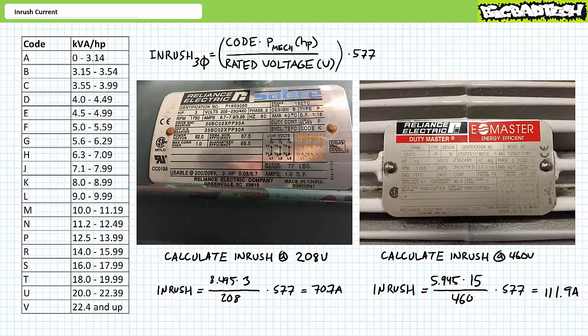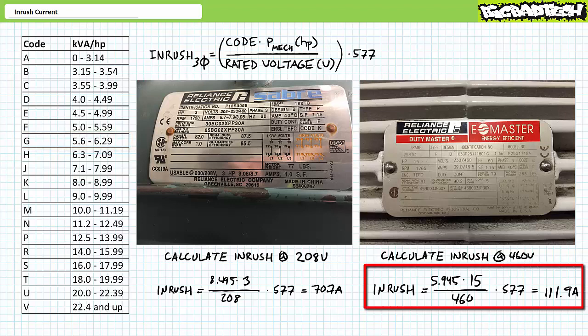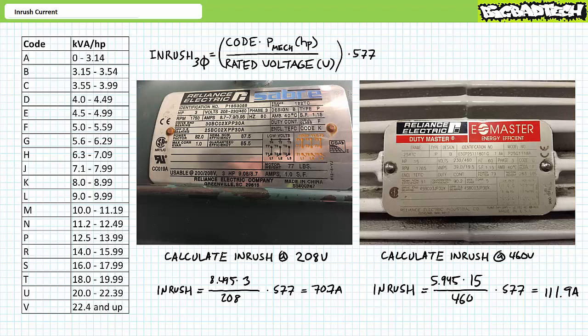The second example features a 15-horsepower motor intended to operate using 460-volt three-phase AC in the high-voltage configuration with a locked rotor code of G, meaning it has a kilovolt ampere per horsepower constant with a low of 5.6 up to a high of around 6.3. Center of mass is around 5.95. Substituting into the inrush equation results in an estimate of roughly 112 amps. As large as this value is, it is only roughly 5.7 times the rated current of 19.5 amps — illustrating that motors can exhibit wide ranges of inrush in relation to rated current, sometimes more than six times, sometimes less.